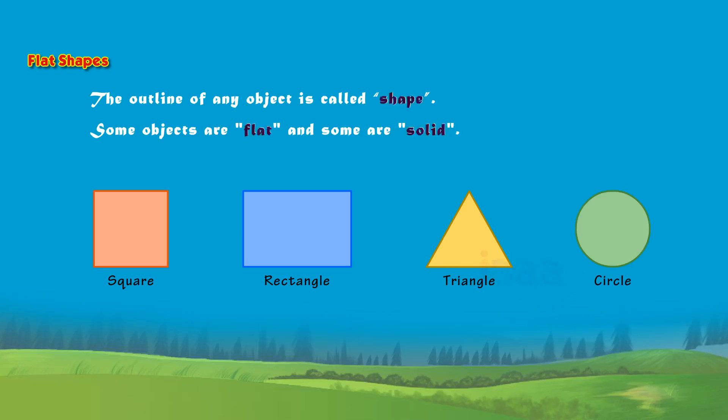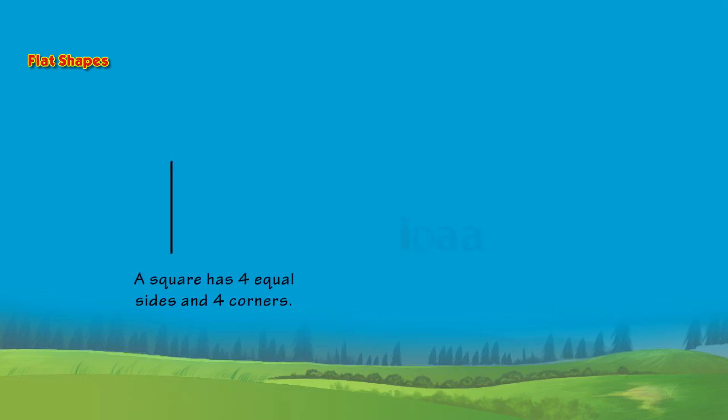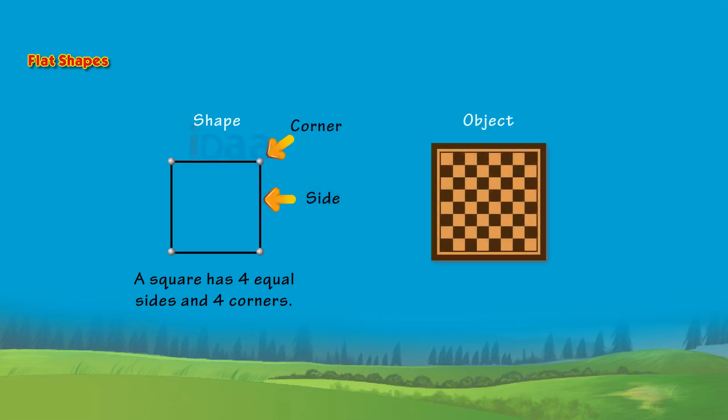Let us now learn about these shapes. Square. A square has four equal sides and four corners. For example, a chess board.